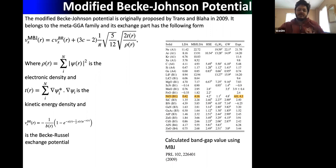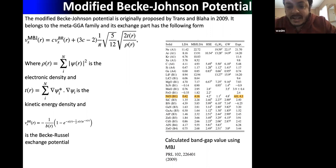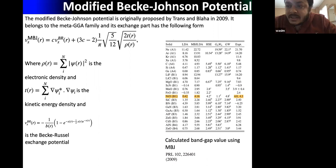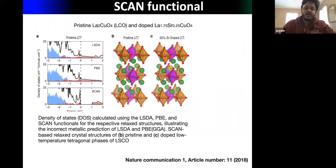These advanced functionals have been found to be successful even in describing correlated systems such as transition metal oxides. For example, mBJ — a very cheap functional popular in the community — has been tested for a series of transition metal oxides and gives very good band gap values compared to more expensive GW-based methods.